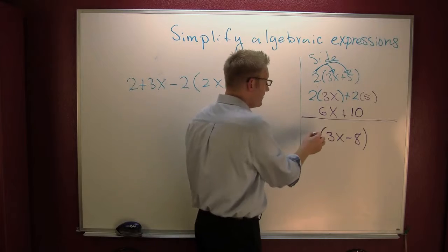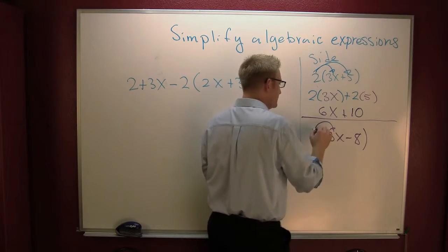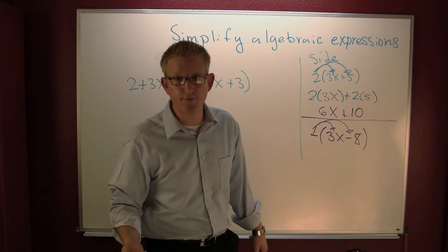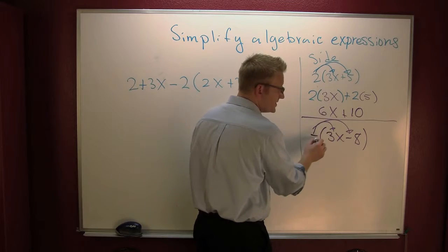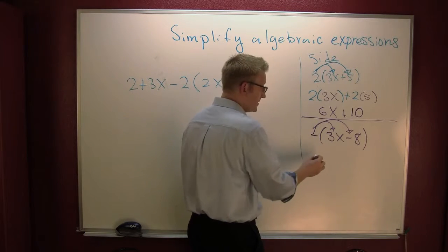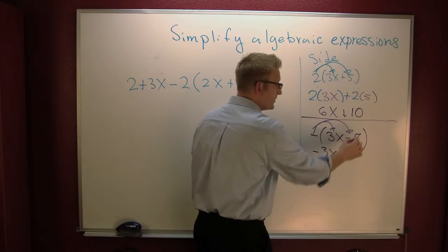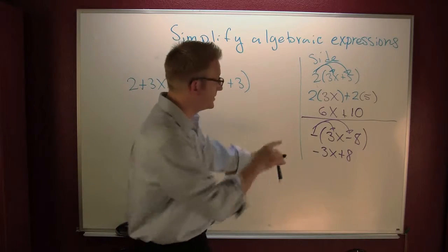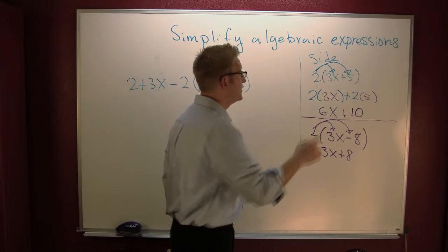What does that minus sign do? It distributes — it goes to everything inside. What this does is it changes the signs of everything on the inside. That was a positive 3x, now it's minus 3x. That was a minus 8, now it's plus 8. A minus on the outside changes the signs of everything on the inside.